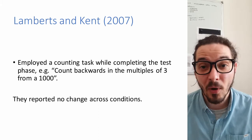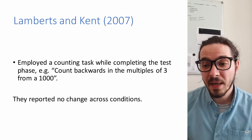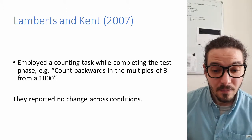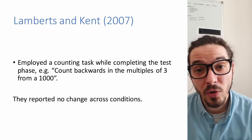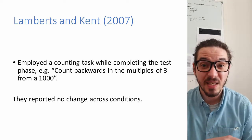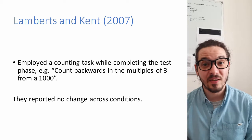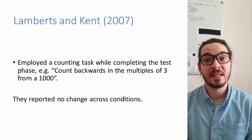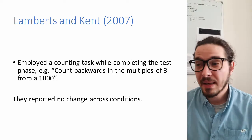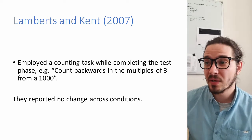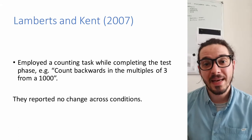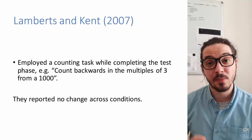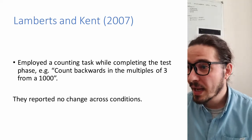Lamberts and Kent asked participants to complete the canonical version of the inverse base rate effect experiment — something described previously — and also a concurrent load condition where participants learned the relationship between symptom compounds and diseases, but during the test phase also needed to simultaneously complete a concurrent load task while making diagnoses. Lamberts and Kent employed a counting task where participants counted backwards in multiples of three from a thousand. Interestingly, they reported no changes in participants' response preferences across conditions.